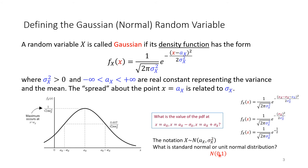If X ~ N(0, 1), this is called the standard normal or unit normal distribution. Standard normal means the mean is zero and σ² equals one. Gaussian and normal are the same; standard normal or unit normal is the Gaussian distribution when the mean equals zero and the variance σ² equals one.